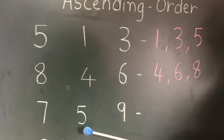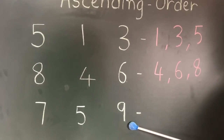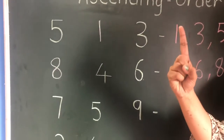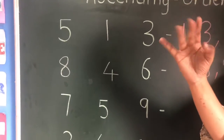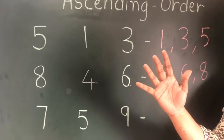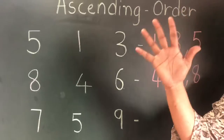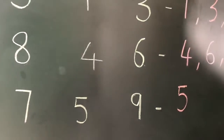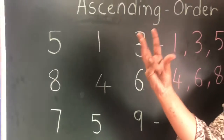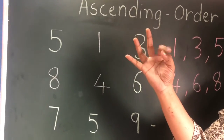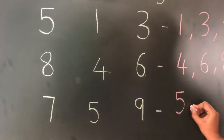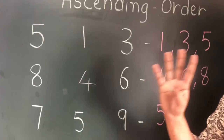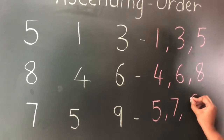The next set of numbers is seven, five, nine. Which is the smallest number? Count: one, two, three, four, five — five comes first. So I'm going to write five here. After five, count six, seven — so I write seven. Then seven, eight, nine — so nine goes here.